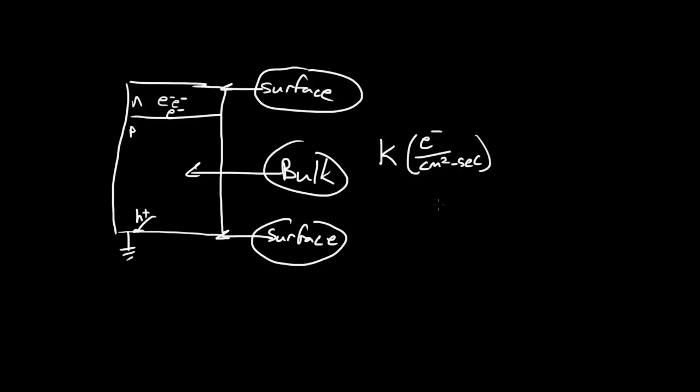Let me write it down here. A1, e to the minus alpha over T, where this A1 is associated with this process up here. This activation energy is associated with this process up here.